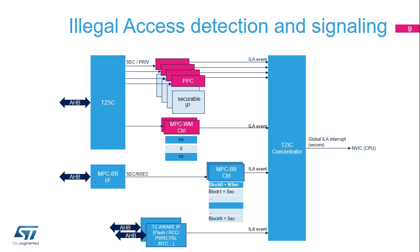This figure details the various sources of illegal accesses and their signaling to the Cortex-M33 core through a secure interrupt request. The TZSC assigns secure and privileged attributes to securable peripherals; whenever a non-secure access to a secure peripheral is attempted, an illegal access is reported to the TZIC concentrator. The MPC watermark controller determines which areas of external memories are non-secure; whenever a non-secure access to a secure area is attempted, an illegal access is reported. Similarly, the MPC block-based controller reports illegal accesses for non-secure access attempts to secure SRAM blocks. TrustZone Aware peripherals also report illegal accesses when a non-secure access attempts to reach a secure resource. The TZIC concentrator receives all these reports and signals the error to the Cortex-M33 core through a secure interrupt request.